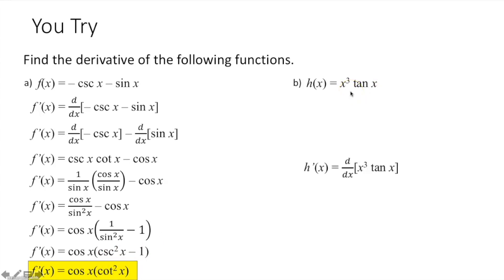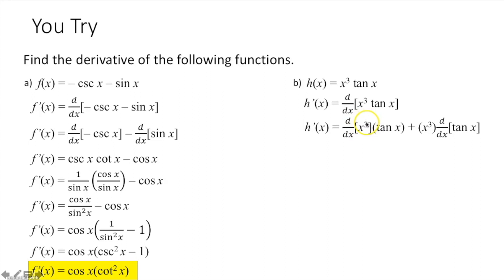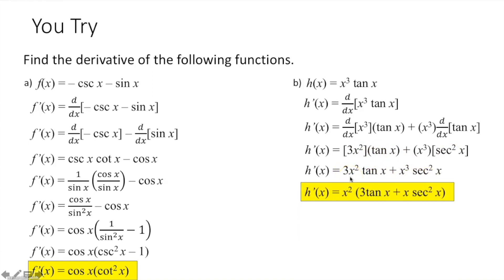For part d, we have two functions multiplied together, so we use the product rule. The product rule gives the derivative of the first function x³ times the second function tan x, plus the first function x³ times the derivative of tan x. Derivative of x³ is 3x², and derivative of tan x is secant squared x. So we get 3x² times tan x plus x³ times secant squared x. Each term has an x² we can factor out, and we're done.